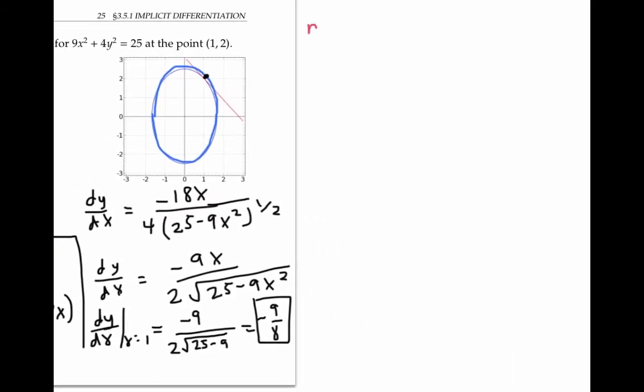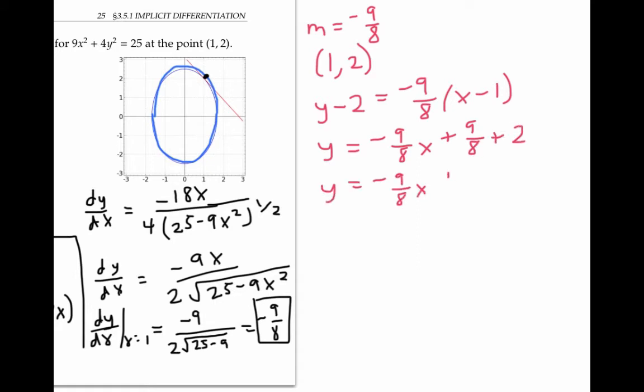Since I found the slope of the tangent line, and I know that point (1,2) is a point on the tangent line, I can now use the point-slope form to write down the equation of the tangent line. Simplified, this becomes y = -9/8 x + 9/8 + 2, or y = -9/8 x + 25/8.